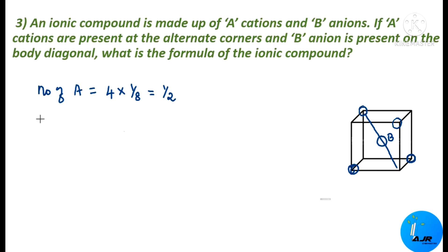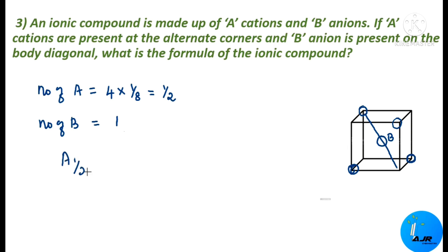Number of B anions: on the body diagonal there is only one B anion. The number of body diagonals used is 1, so number of B = 1. The ratio of A to B is 1/2 : 1. Writing in whole numbers, the formula is AB₂.